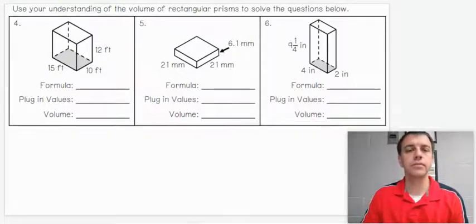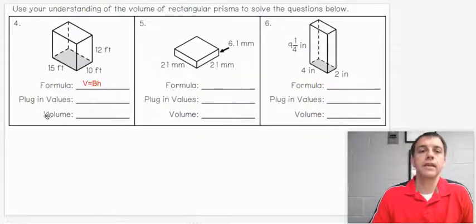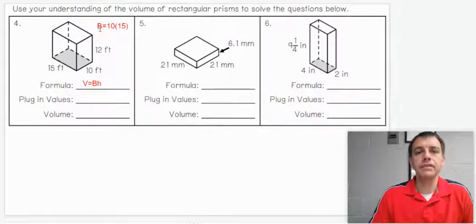Taking a look at number four, what is the base? The base here is shaded, and it is a rectangle. Our formula stays the same, volume equals base area times height. But we need to find the base area first before we plug in all the values. What are the two numbers that make up the bottom of this object? 15 and 10. So base area equals 10 times 15.